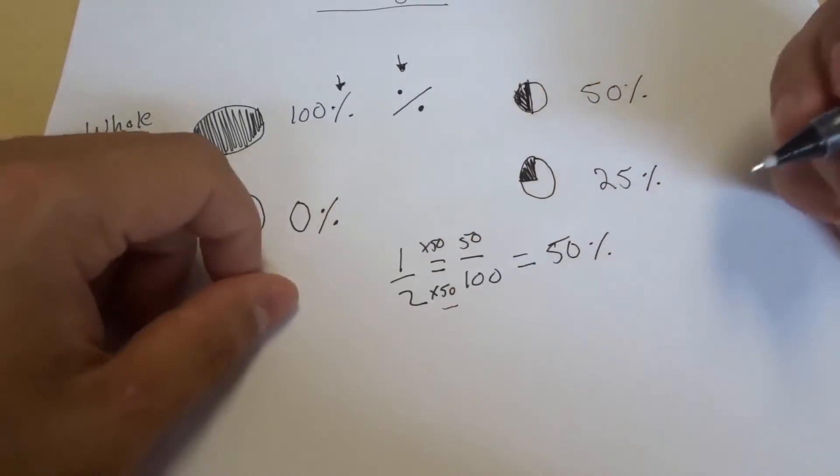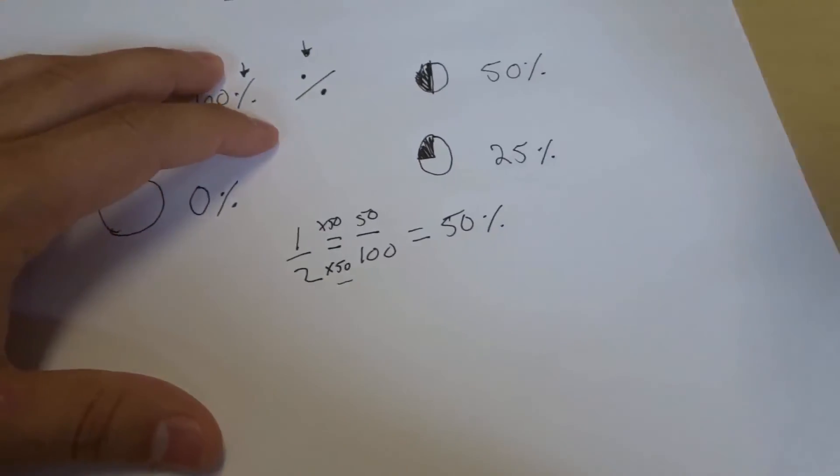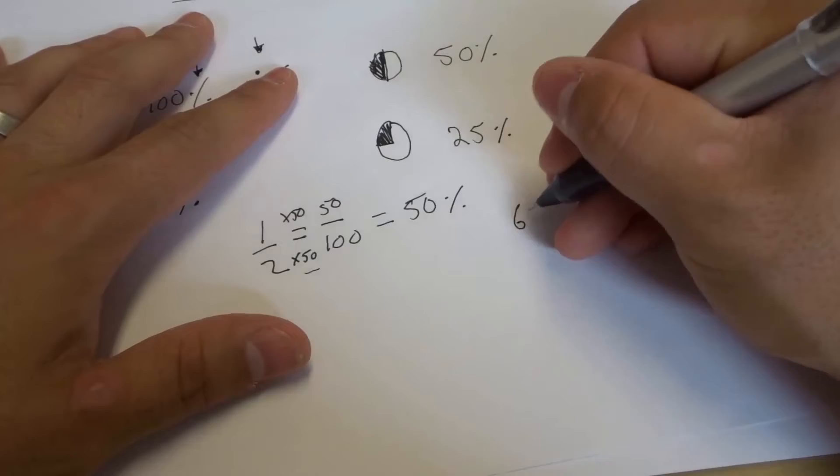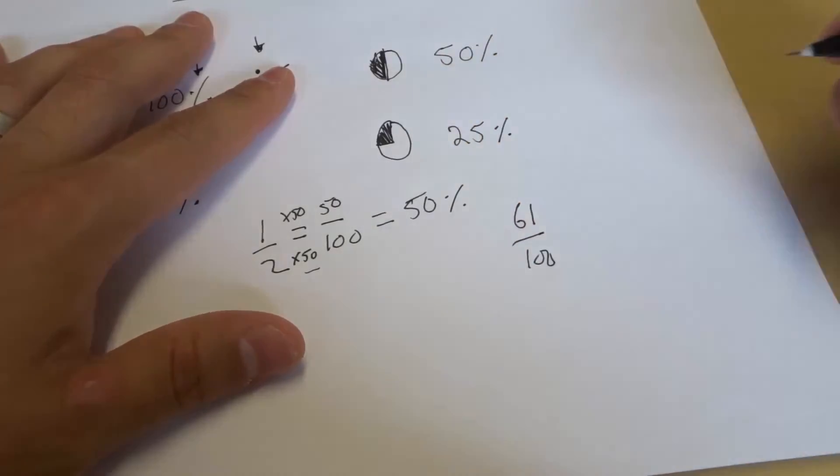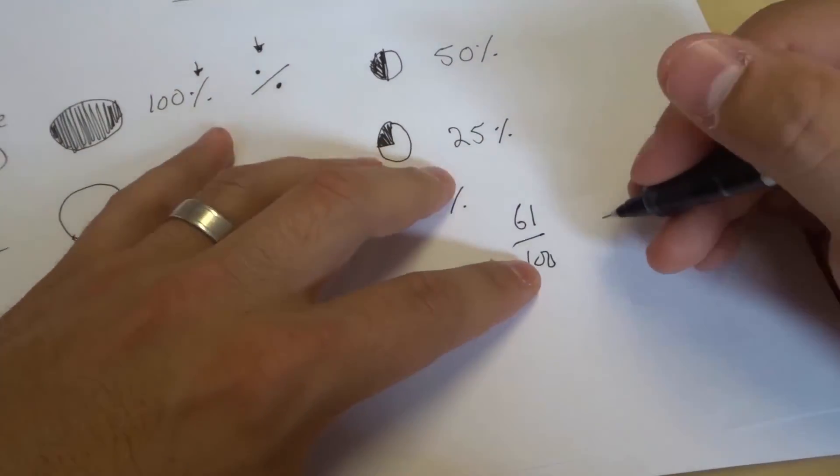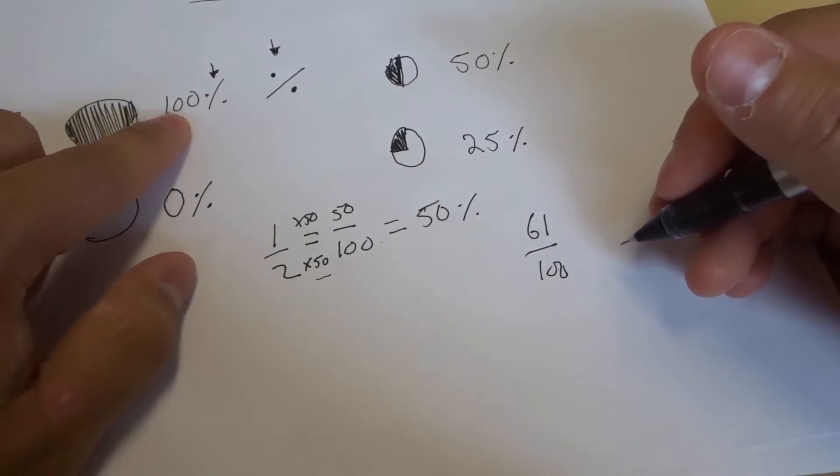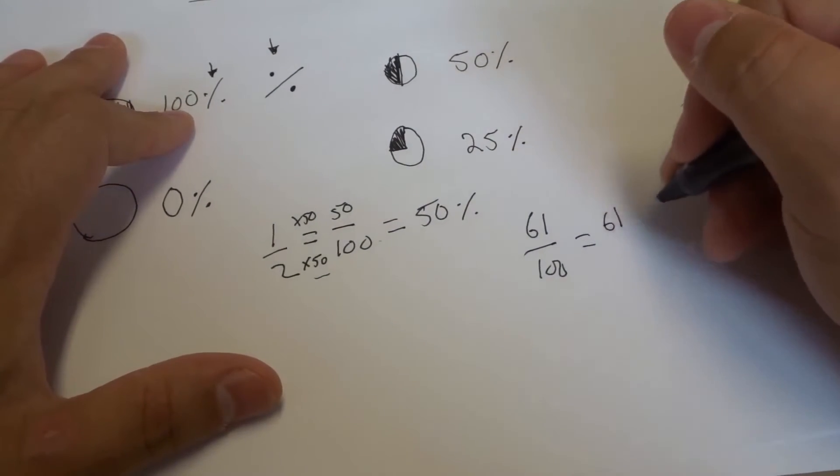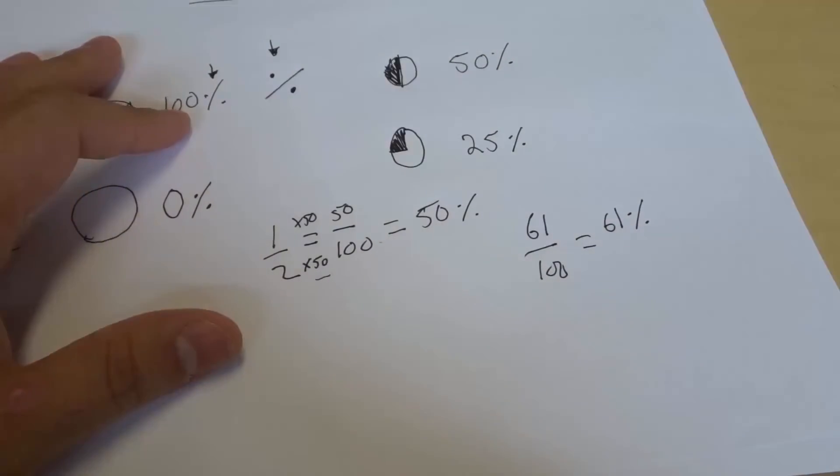The top number is actually going to be the percentage. So let's say we have a fraction, and it is going to be something like 61 out of 100. And if we have 61 out of 100, that means we have 61 out of this 100, meaning we have 61% just like that.